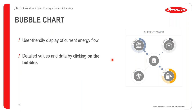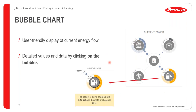SolarWeb provides a very user-friendly display of current energy flows as well as detailed values and data by clicking on the values. As shown in the screenshot, bubbles appear representing different parts of the system, and clicking on any bubble expands it to show exactly what is happening with that particular section.